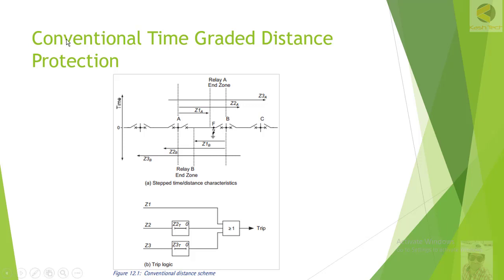In protection system setting calculations, we keep Zone 1 at 80 to 85%, making sure the breaker only trips for faults between A and B, and not for faults between B and C or on lines beyond Station B. By doing this, if there is a fault beyond the 80% point — for example at fault point F — the breaker at Station B will trip in Zone 1, instantaneously.